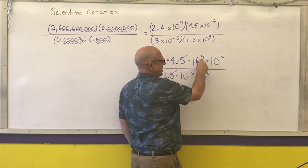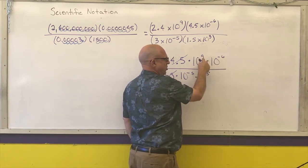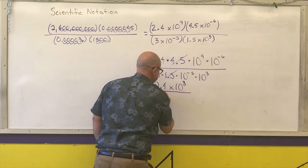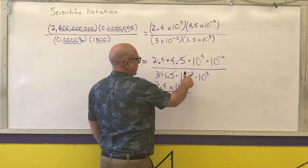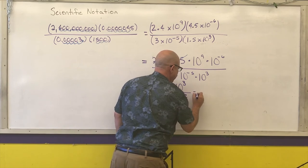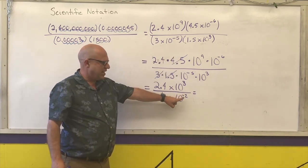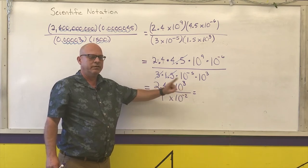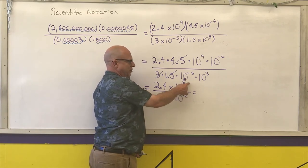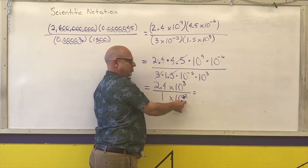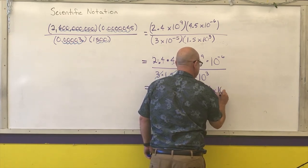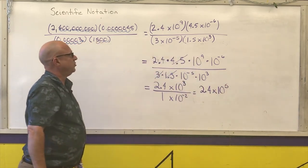So on the top I am left with 2.4. If I multiply things with exponents I add them, so adding a negative is subtracting, 9 minus 6 is 3. Same thing here, 3 minus 5 is negative 2. From our properties of exponents, if I have a negative exponent in the denominator I move it to the numerator. Or another way to think about it, I have a quotient of exponents which says take the top number and subtract the bottom one, 3 minus a minus 2 is 3 plus 2 which is 5.